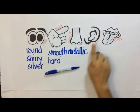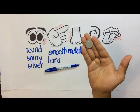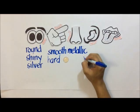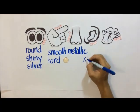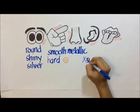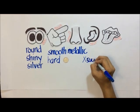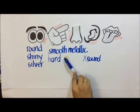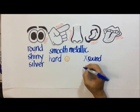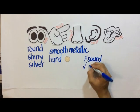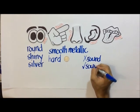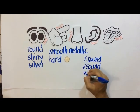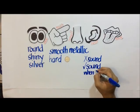Now let's use our ears. Do you hear something from the object? No, therefore it has no sound. But if I tap the object, it produces sound. So therefore, when the object is hit with another object, it produces sound.